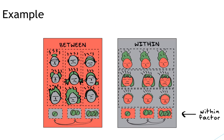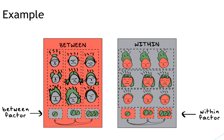We can compare this repeated measures design with a randomized three-group design. If participants were randomly assigned to one of the three dosages, we would call the independent variable a between-subjects factor, or between-factor, because it varies between participants.